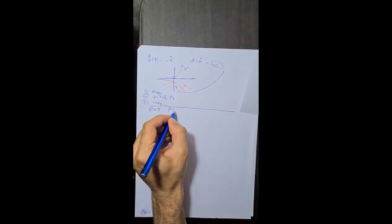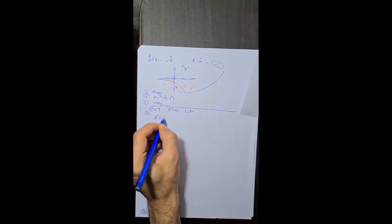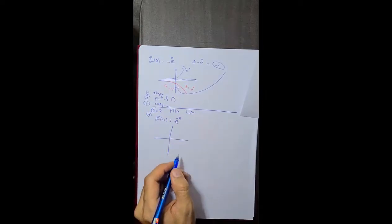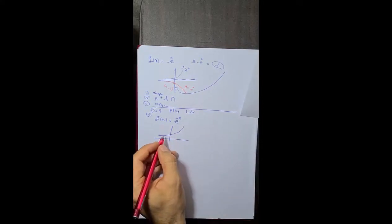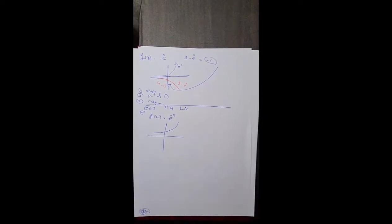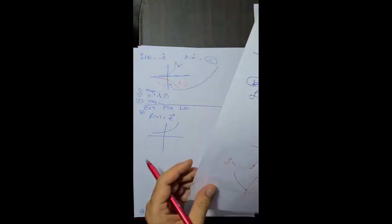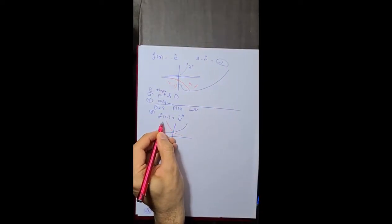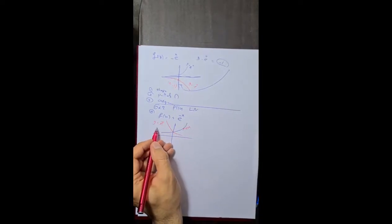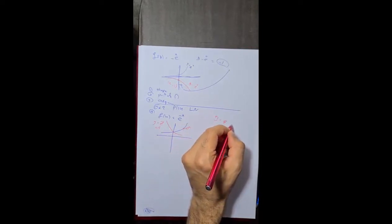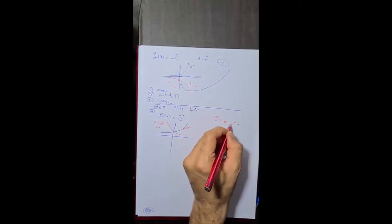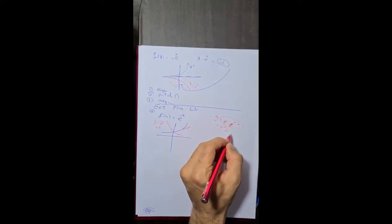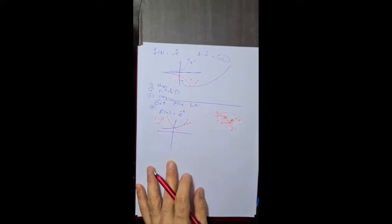Now I'm going to solve Example 2, which is very important. Part (a): f(x) = e^(-x). As I told you, the shape changes because of the negative exponent. We can compare this with 2^(-x) — just as 2^(-x) reflects 2^x, here e^(-x) reflects e^x. So the graph of e^(-x) is the reflection of e^x about the y-axis.